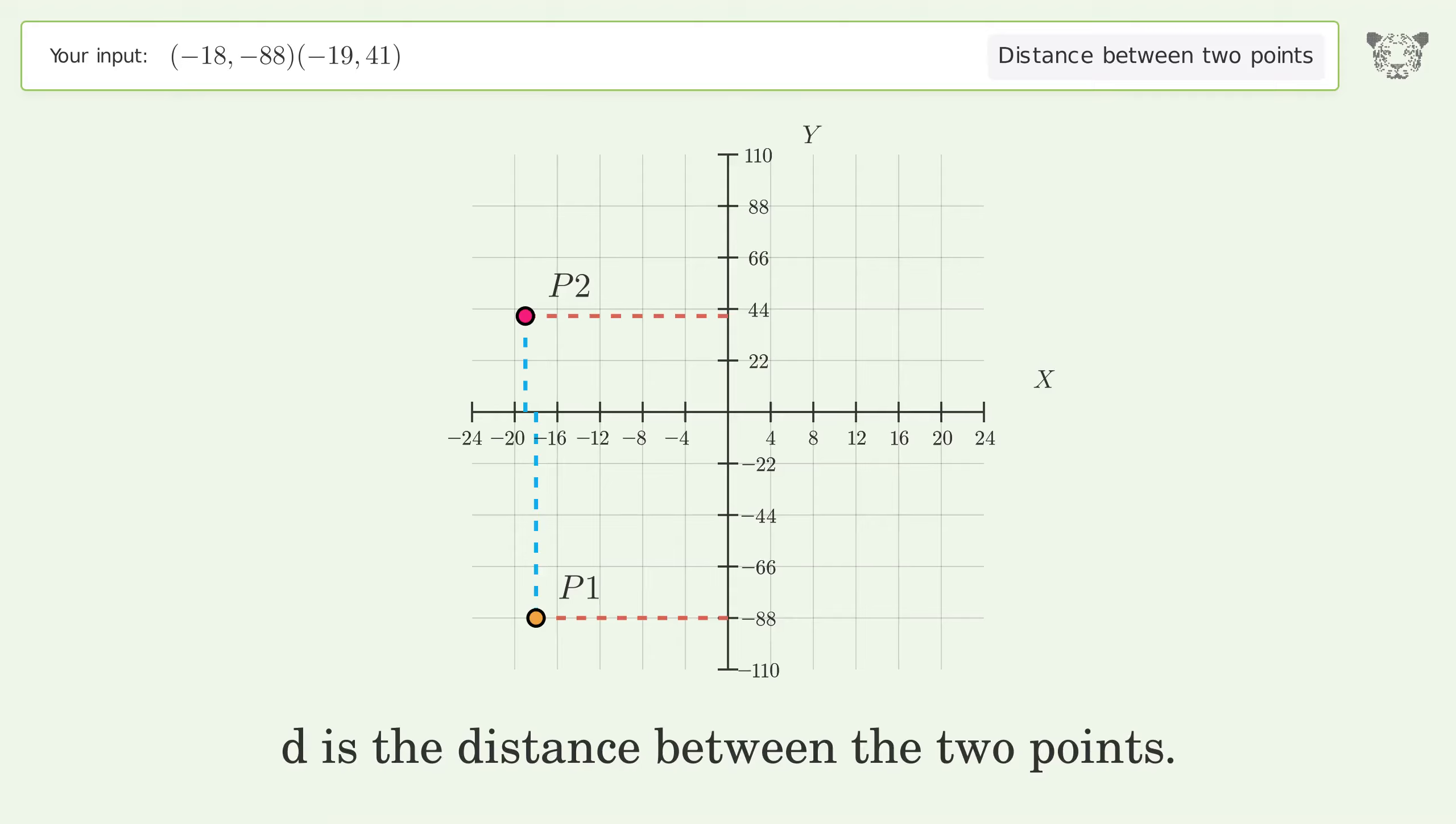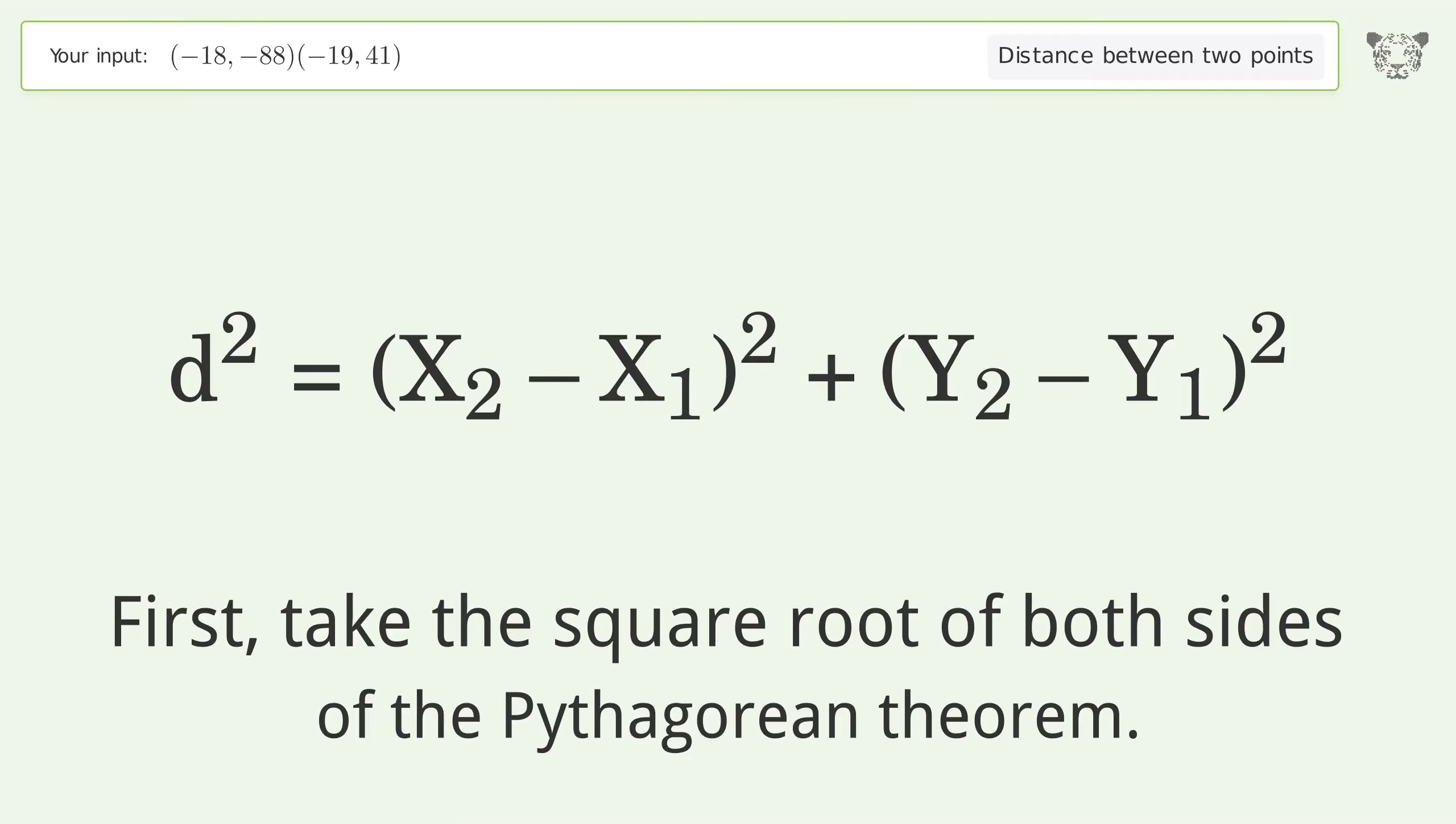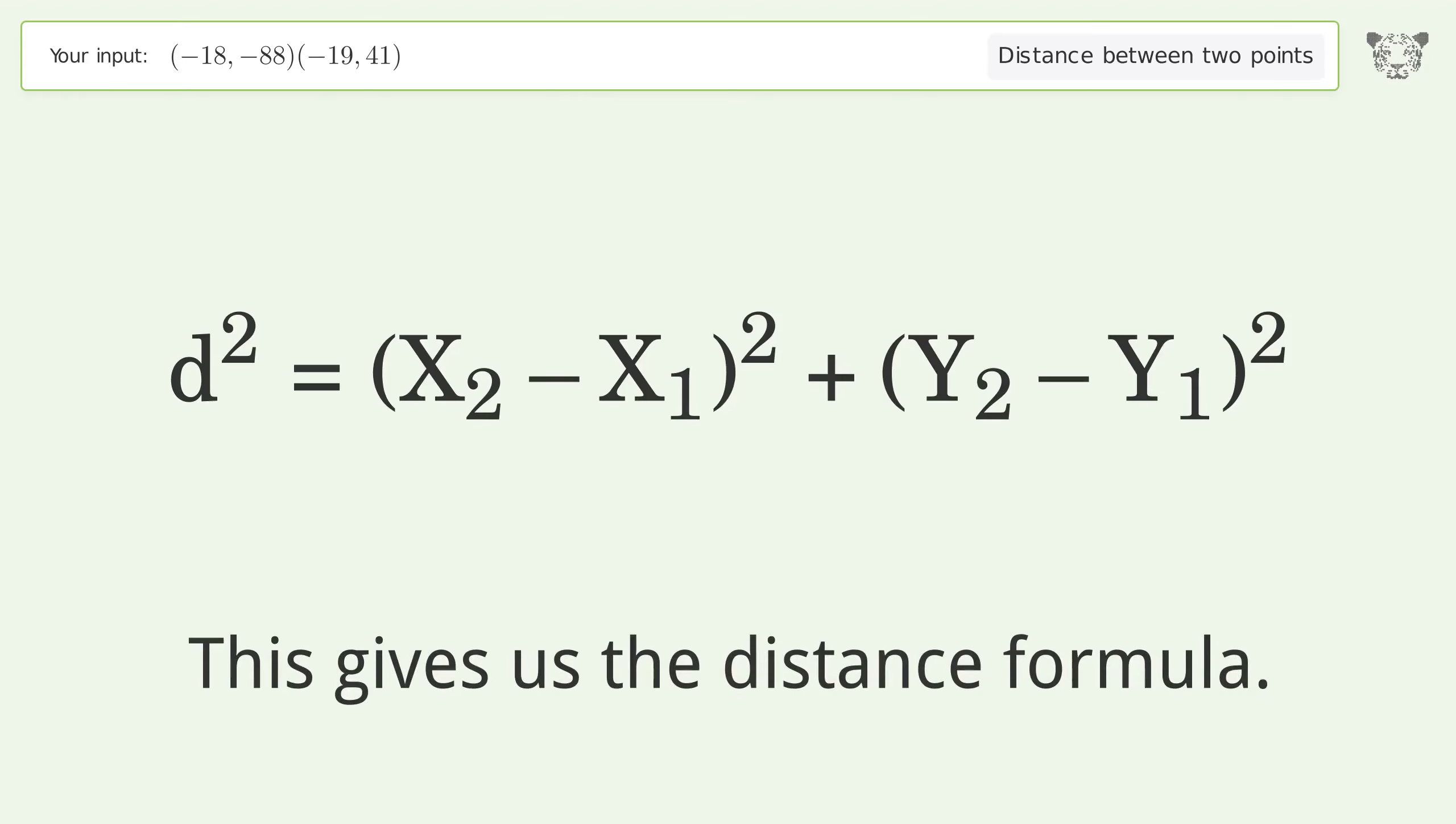D is the distance between the two points. First, take the square root of both sides of the Pythagorean theorem. This gives us the distance formula.